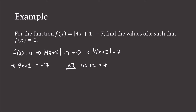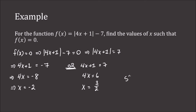Now we have two linear equations. We solve each one. Looking at the first one, if we subtract 1 from both sides, we'll be left with 4x equals negative 8. Then, if we divide by 4, we find that x is negative 2. For the second equation, we take the same steps. We subtract 1. We get 4x is 6. Then divide by 4. We get x is 6 over 4, which is 3 over 2. So our solution is a set of two values: negative 2 or 3 halves.